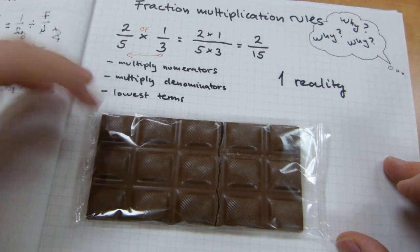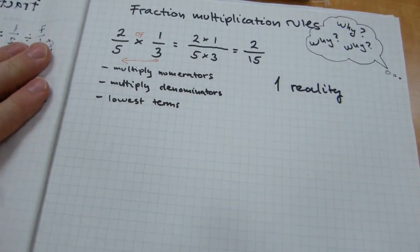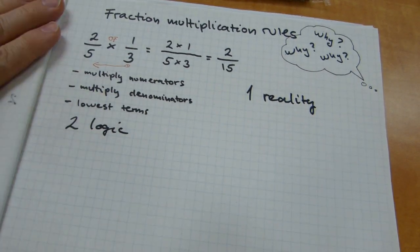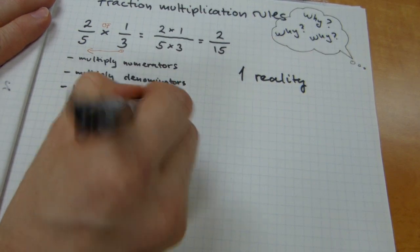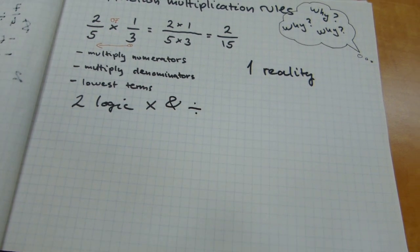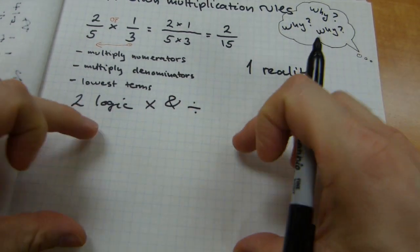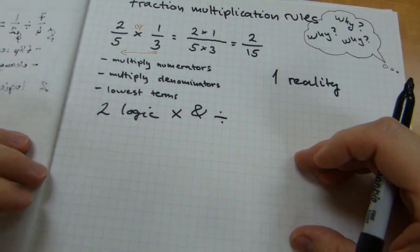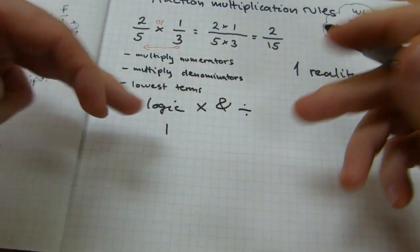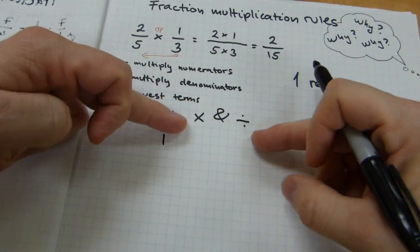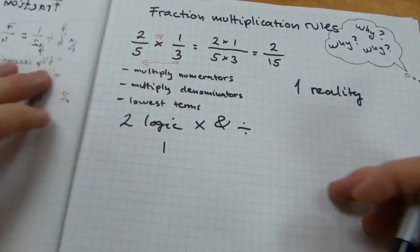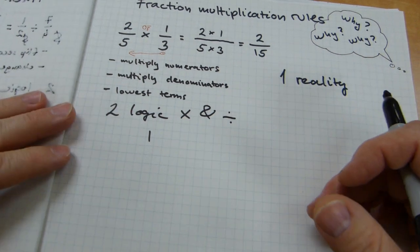The second reason doesn't need the chocolates. I'm going to put it there. And the second reason is based on logic. And, namely, the logic of multiplication and division. So, to explain this a little bit, I'm going to make an example here with whole numbers. I'm going to use the numbers 3, 5, and 15, why not? So, this is how it looks like.